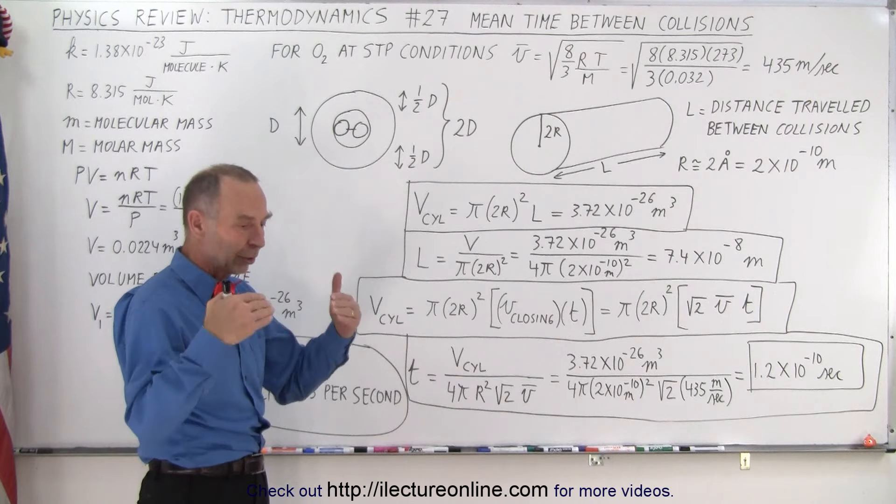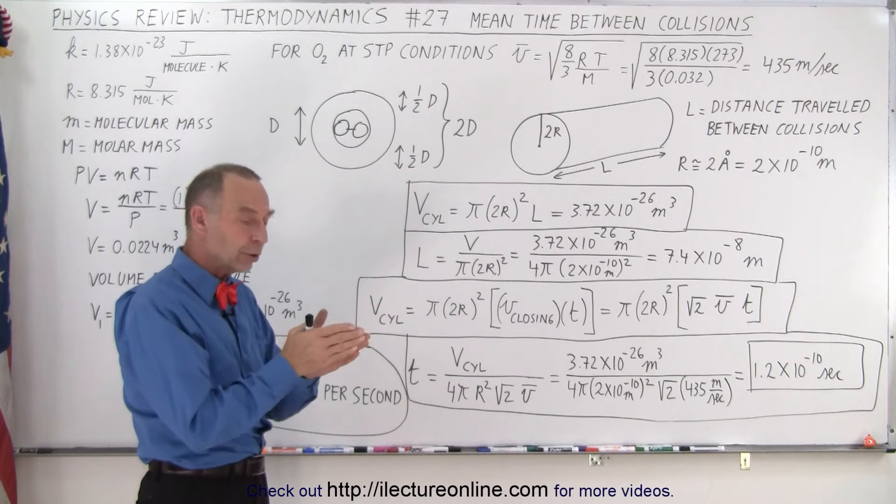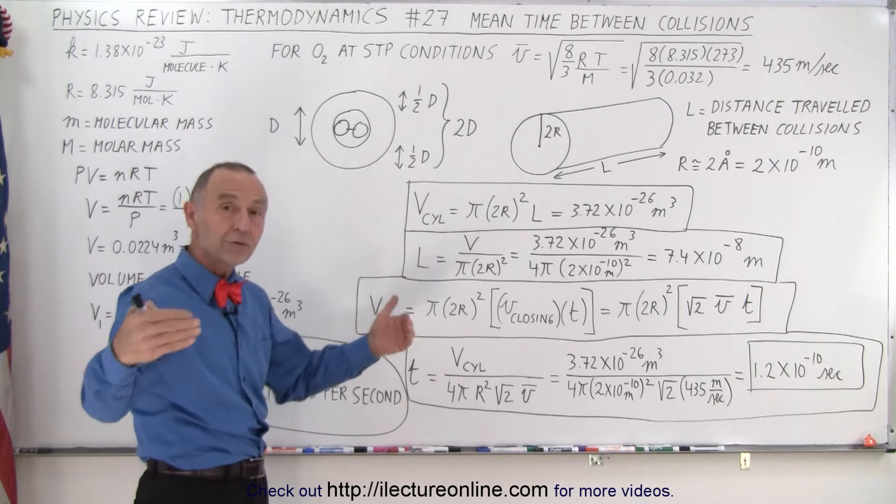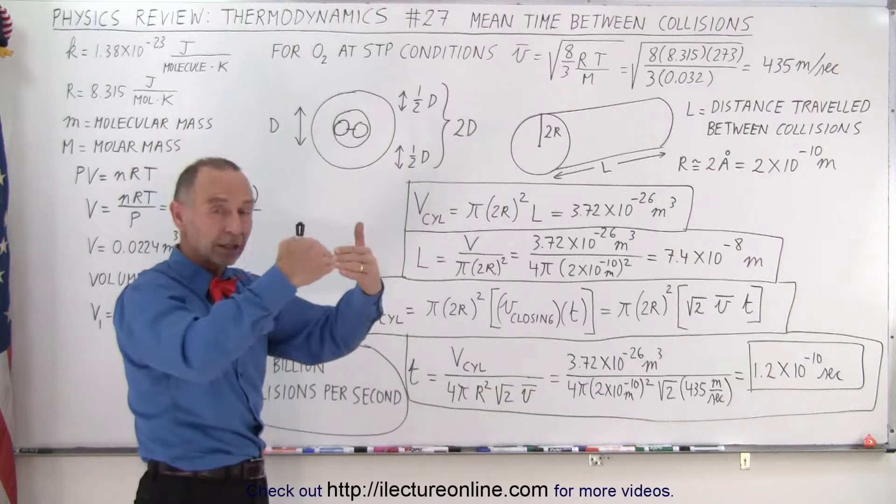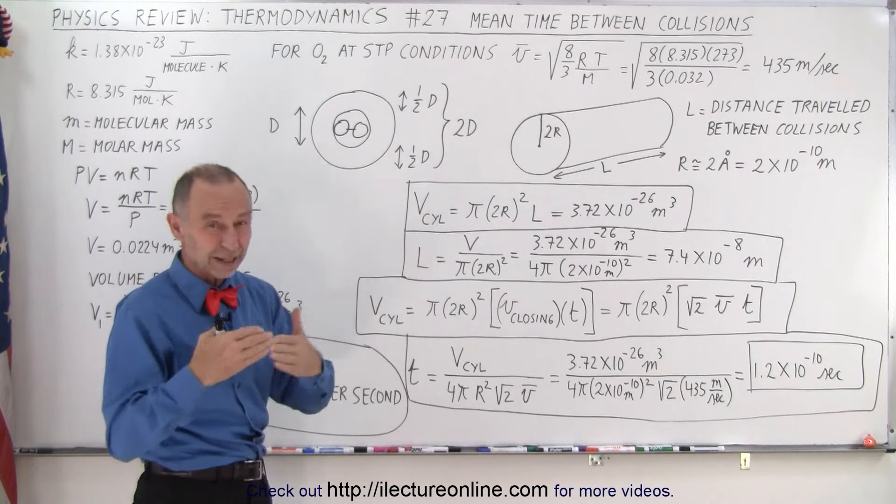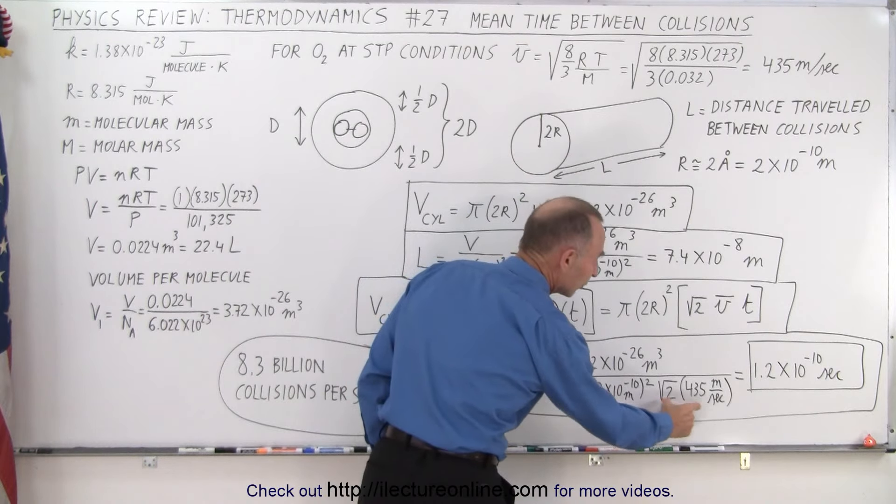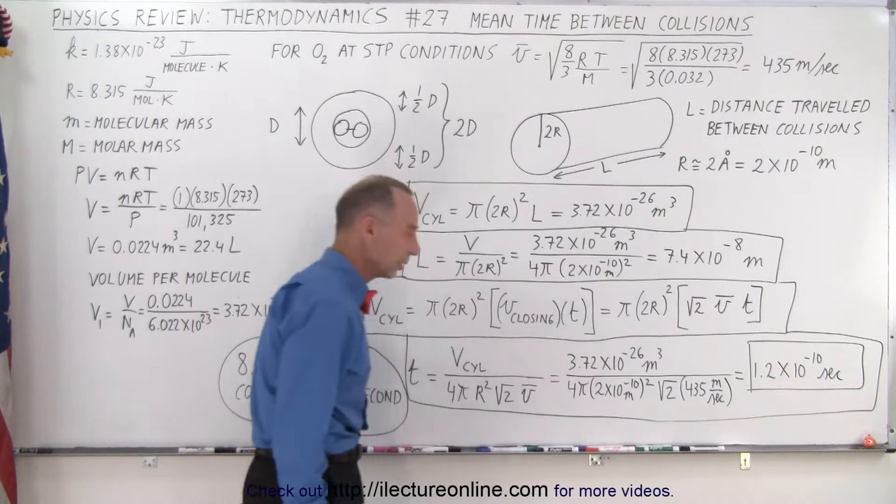Now it turns out that the closing speed is somewhere between the velocity of one molecule and the velocity of two molecules. Of course, if they're head-on collision, that's the velocity of two molecules towards one another, but it's not always a head-on collision. So the estimate is that it's about the square root of 2 times the velocity of a single molecule.